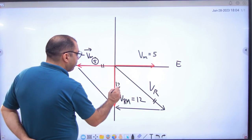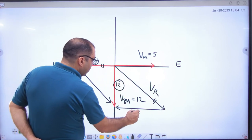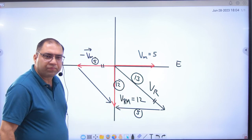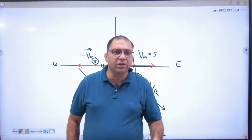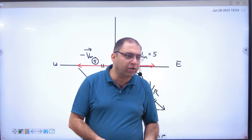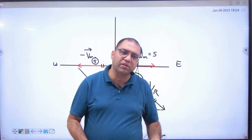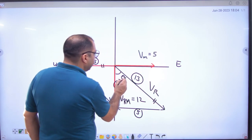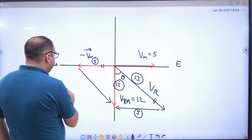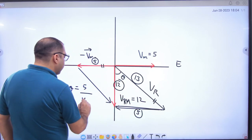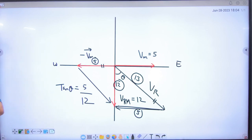In this question, this side is 5, so this is also 5, and obviously this is 13 — because 12 and 5 form a right angle triangle, so the hypotenuse will be 13. Magnitude is 13. The problem is direction: for angle theta, tan theta equals 5 divided by 12, so theta is tan inverse of 5 by 12.